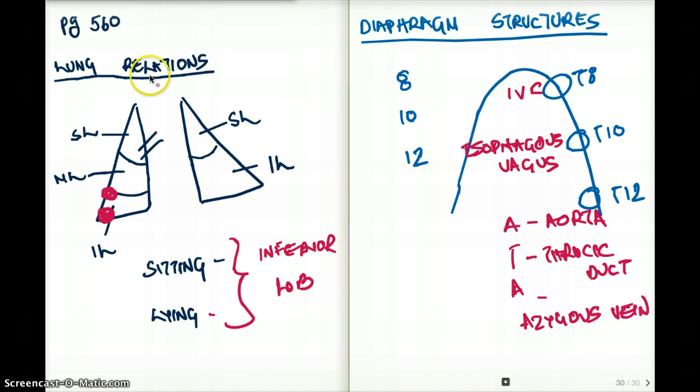These are the different structures coming out from the diaphragm. Next we want to talk about C3, C4, and C5. These give innervation to the diaphragm. And together, it's called the phrenic nerve. The phrenic nerve supplies the diaphragm.